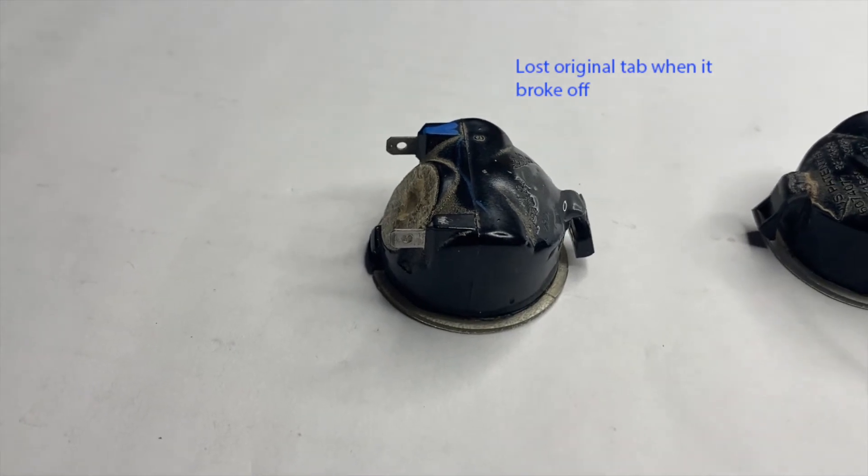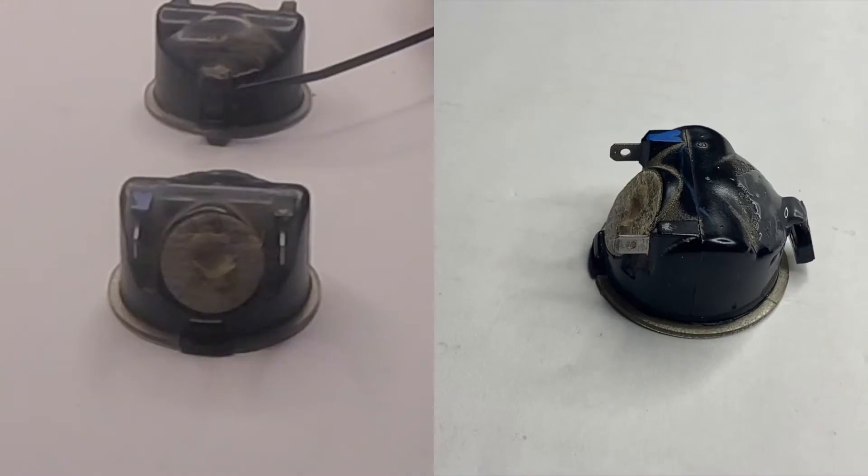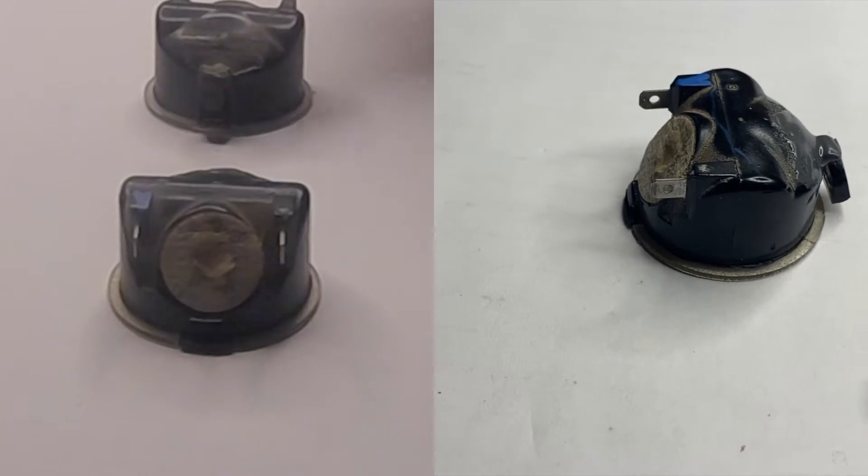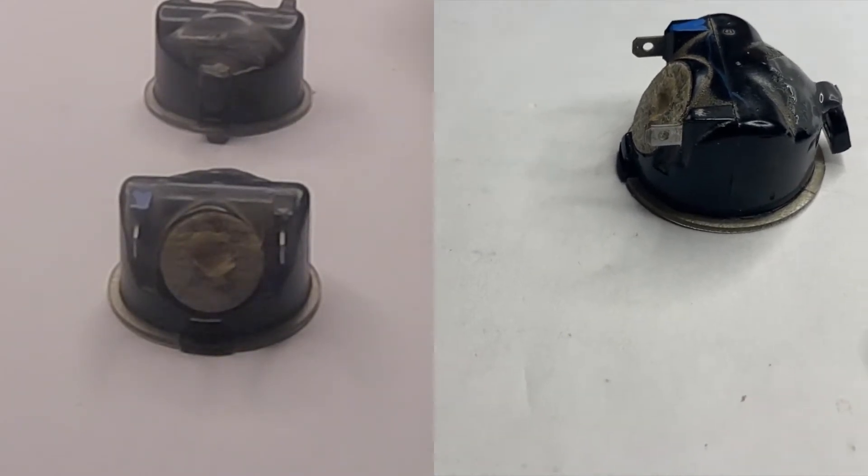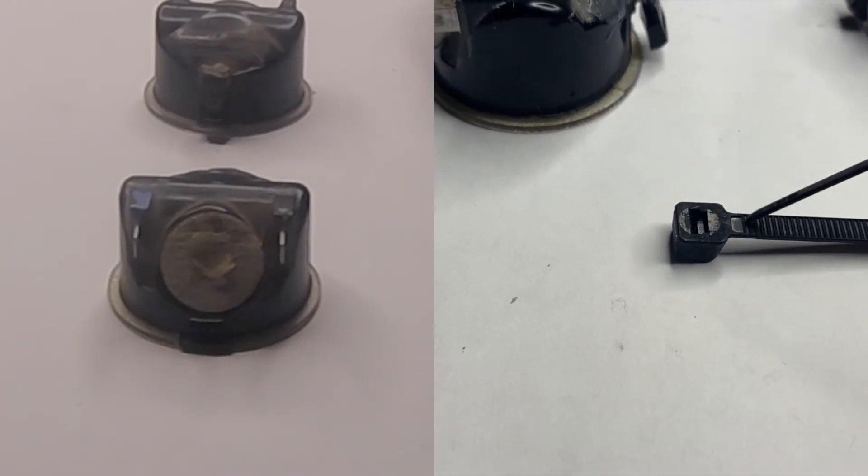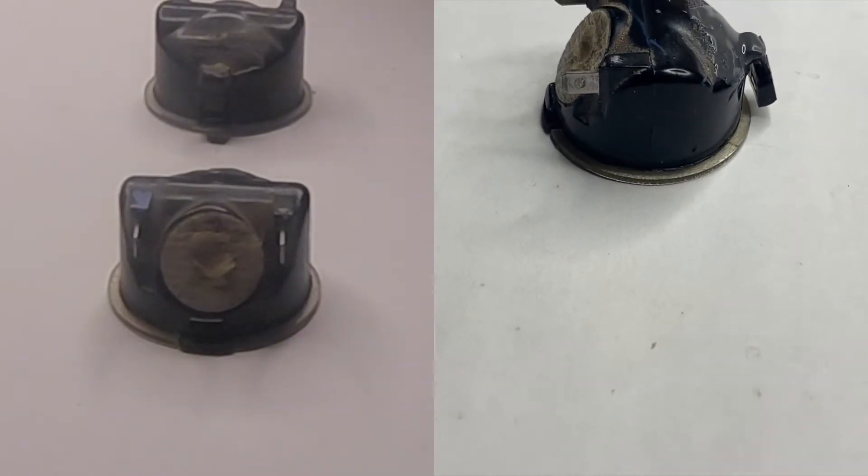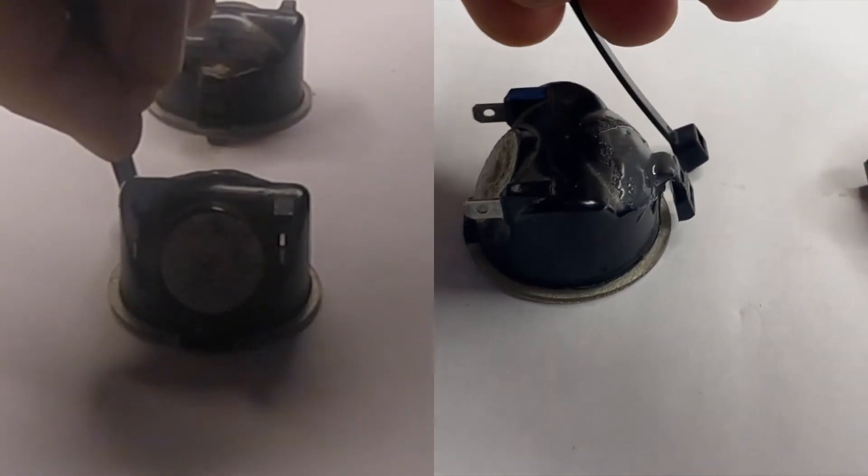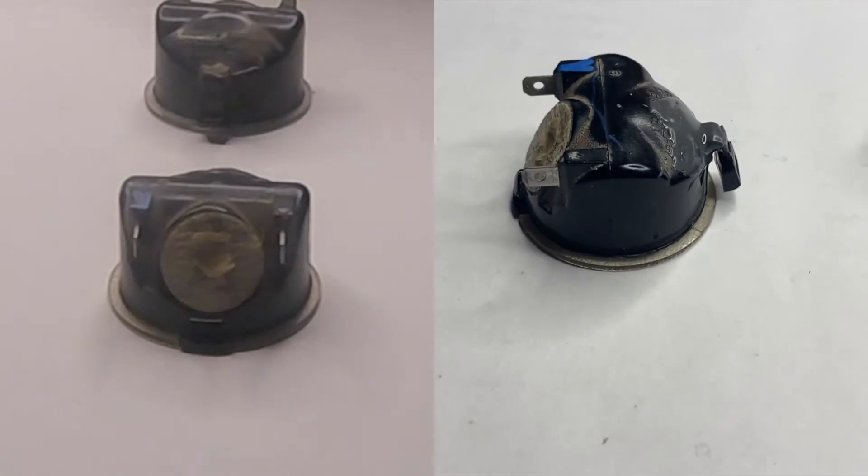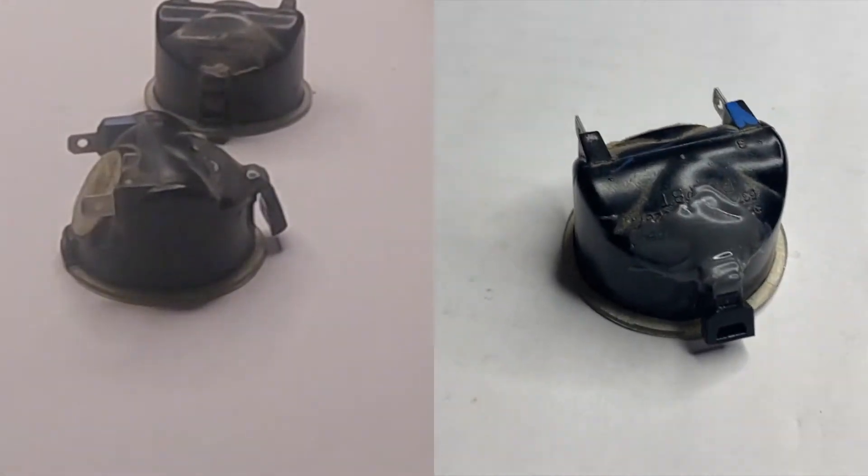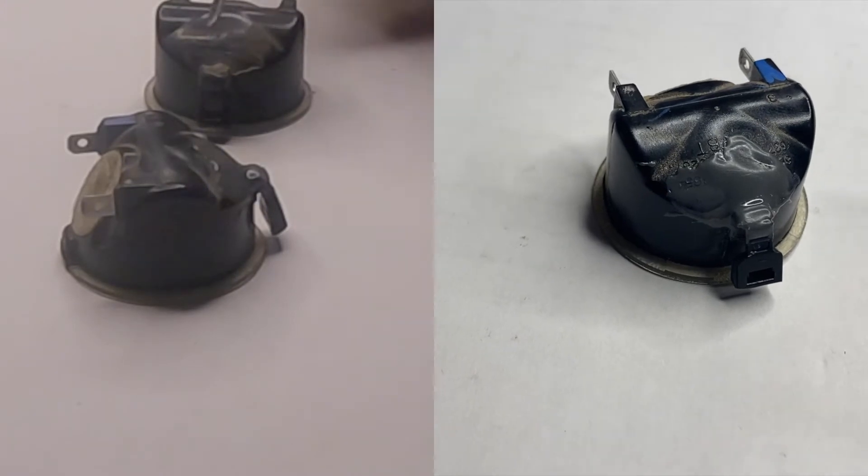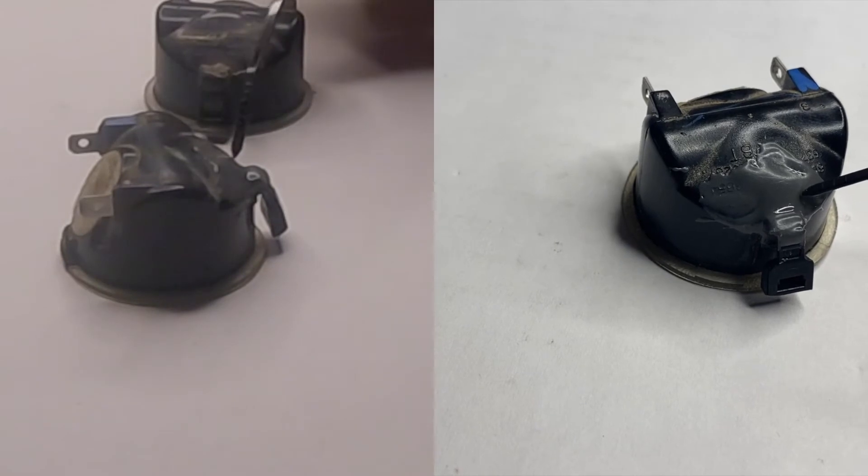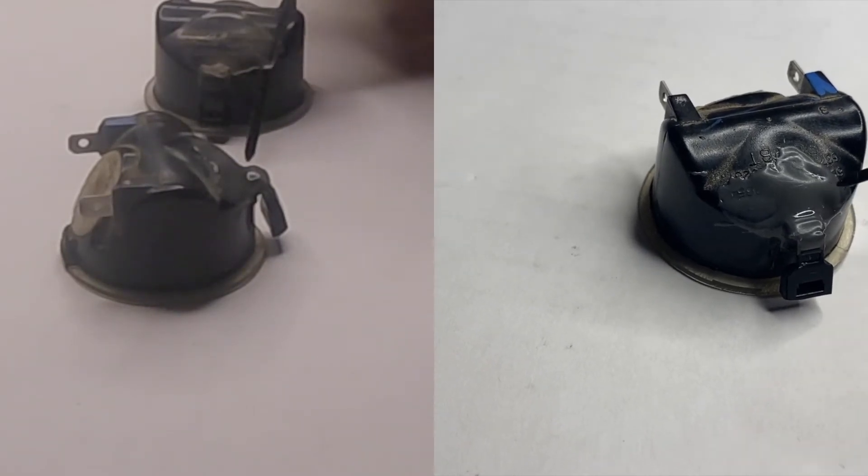Rather than use the original piece, which is not very flexible, what was used to repair this one was the end of a zip tie. And you can see that it looks very familiar. That's what was used, using some DAP Rapid Fuse just to join it together, and then some JB Weld was used to reinforce it.